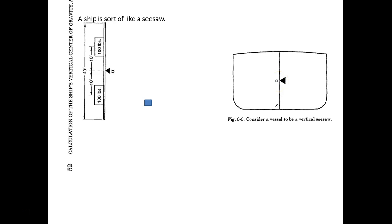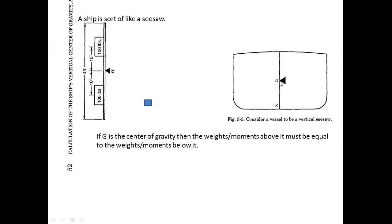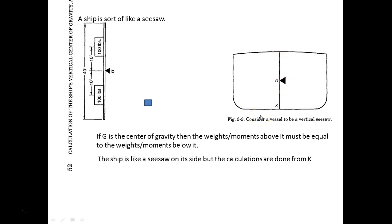If it's the center of gravity, what it really means is that half of the weights above are the same as the weights below — whatever the moments or weights above are the same as the weights below; that's what makes it the center. We are going to use the keel, the level of the keel, as a reference to make lots of measurements. This distance is called KG — that's the height of the center of gravity of the vessel at this moment.